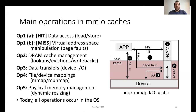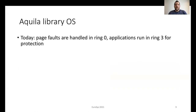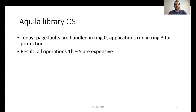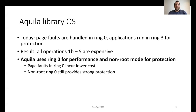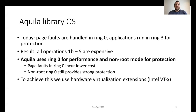In Linux, all of these operations happen inside the operating system and they require a protection domain switch from user to kernel space. Today, page faults are handled in ring 0 and user applications run in ring 3 for protection. For this reason, all operations in the miss path are expensive. These include virtual address space manipulation, cache management, device I/O, and other management operations. We designed and implemented Aquila, which uses ring 0 for performance and non-root mode for protection. In this case, page faults in ring 0 incur lower costs and non-root mode still provides strong protection. To achieve this, we use hardware virtualization extensions.